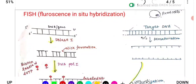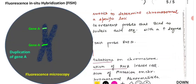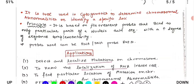FISH stands for Fluorescence In-Situ Hybridization. Fluorescence means light will be emitted, in-situ means within the cell, and hybridization means binding of two complementary strands. FISH is a tool used in cytogenetics to determine chromosomal abnormalities — mutations, deletions, duplications — or to detect a particular gene on a chromosome.